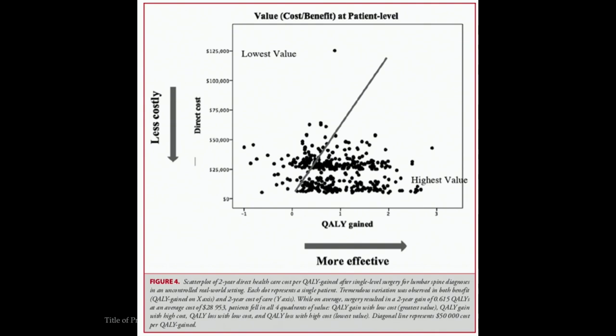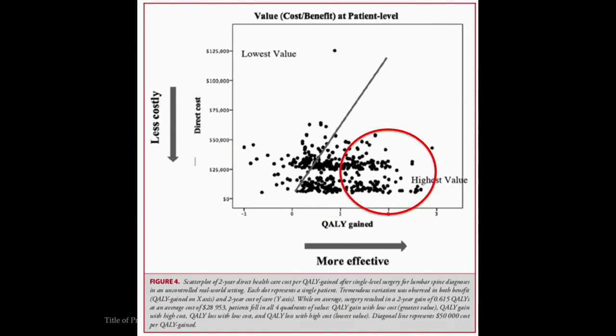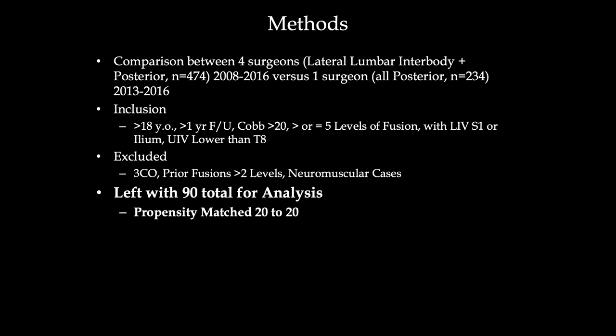If this is the direct cost and QALY gained curve, you can see it's sort of everywhere. We want to get to a better area, and we started this process at HSS back in 2016 to look at this retrospectively. We compared surgeons who had approached adult deformity surgery with lateral and open posterior approaches versus another surgeon who had done all-posterior approaches, looking at data from 2013 to 2016.